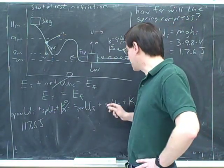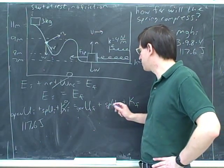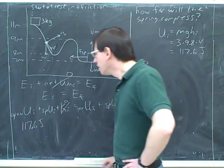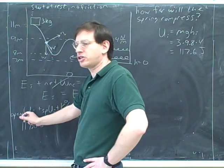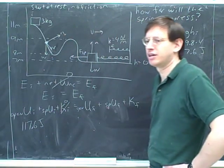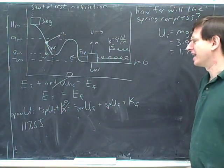So in this case, there's two different types of potential energy. So here I can't just write U. I have to write SPU for spring energy or gravU for gravitational energy. So what you figured out here was the gravitational potential energy. What was the original spring potential energy? Zero. Yeah. That's right.